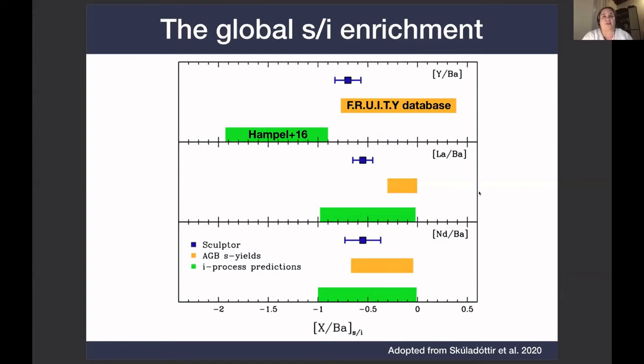And then when we go to lanthanum, we see that the lanthanum over barium that we measure is not consistent with the s-process alone, but the neodymium is consistent with both the s and i-process. So this result is very exciting, because what we are now seeing is that the i-process is needed to explain the overall chemical enrichment in Sculptor. This means that the i-process is not only a niche that we need to explain a few peculiar stars, but it's something that has a big global impact and is necessary to understand the chemical enrichment of the galaxy as a whole.